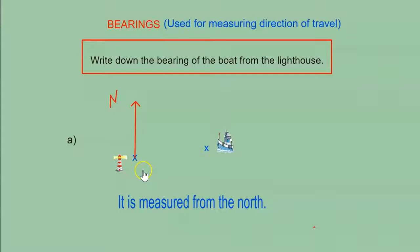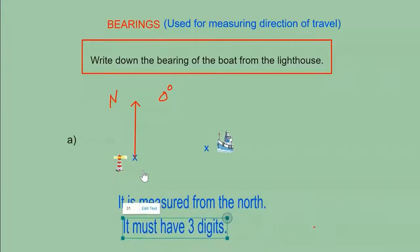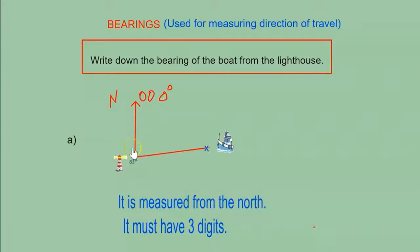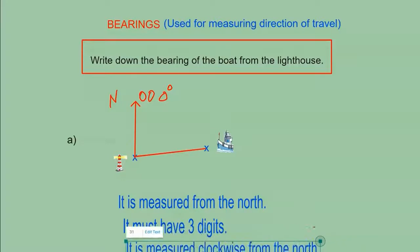That should be your zero degrees. There's a second condition for measuring bearings: it must have three digits. So if that's only one digit, we add two more zeros — making three zeros, which is three digits. Now we're going to start measuring the angle, or the bearing, from the lighthouse to the boat. We're going to need a protractor for this.